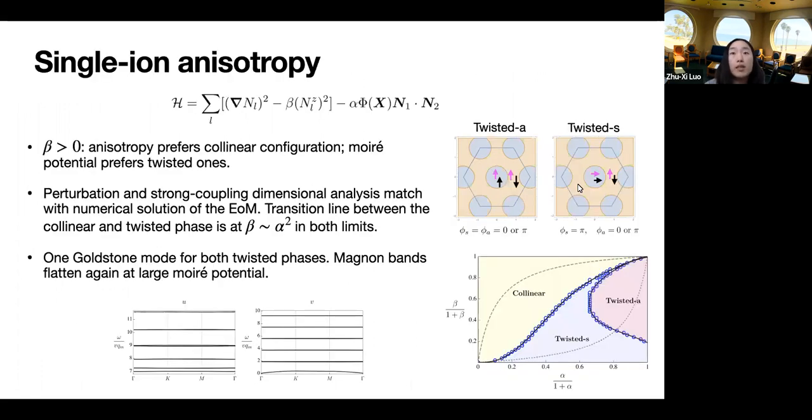Next, we add back the beta term with anisotropy. And so when beta is larger than zero, it is an Ising anisotropy and prefers the collinear configuration along positive or negative z. This term competes with the interlayer moiré potential term, which prefers twisted configurations. I will not go into the details and just flash the results. So using perturbation theory and strong coupling dimensional analysis, we find that there are two such twisted phases, called twisted S and twisted A, occupying different regions of this phase diagram. The phase diagram was found by numerically solving equations of motions and minimizing energy. And also in both weak and strong coupling limits, the transition line between the collinear and twisted phases is beta proportional to alpha squared.